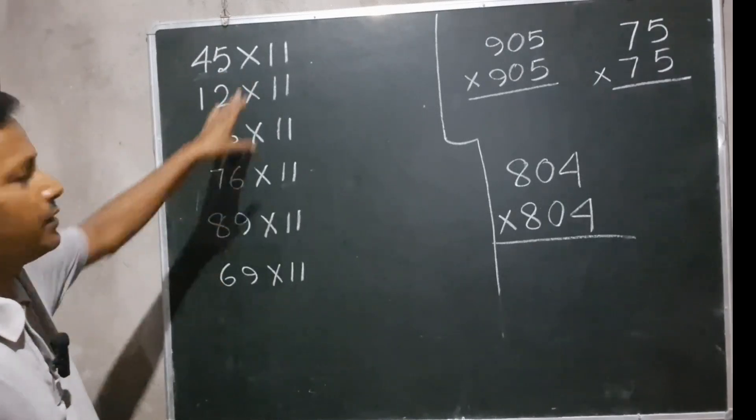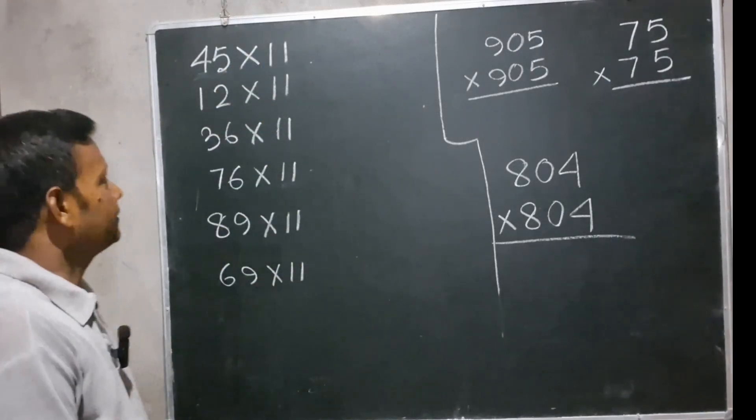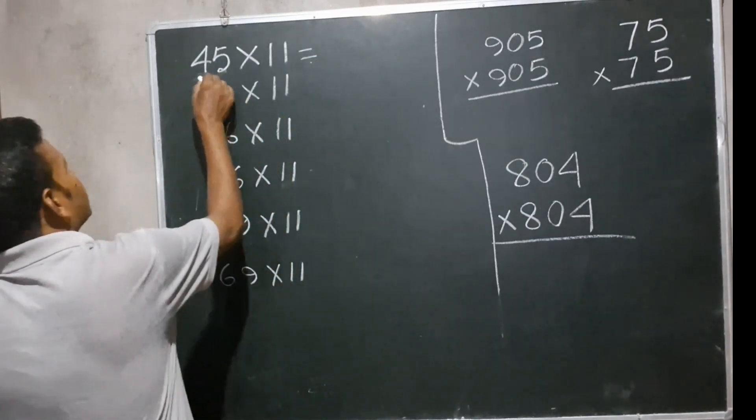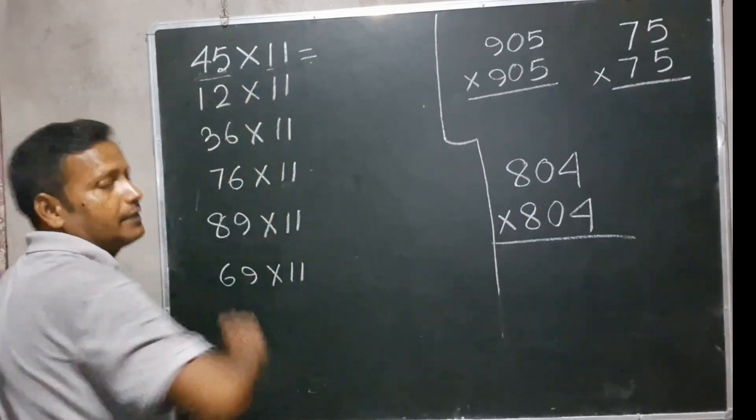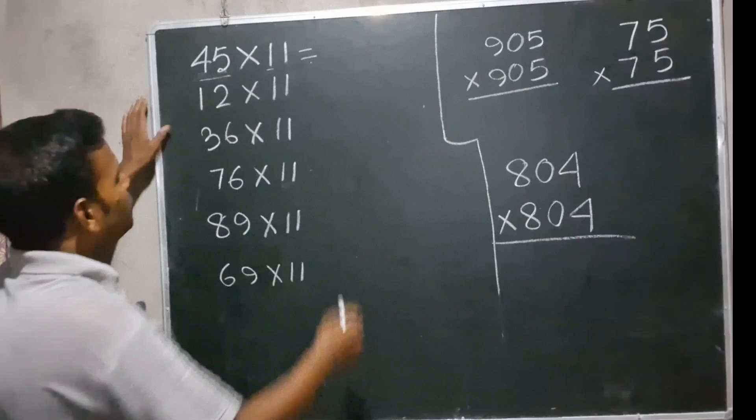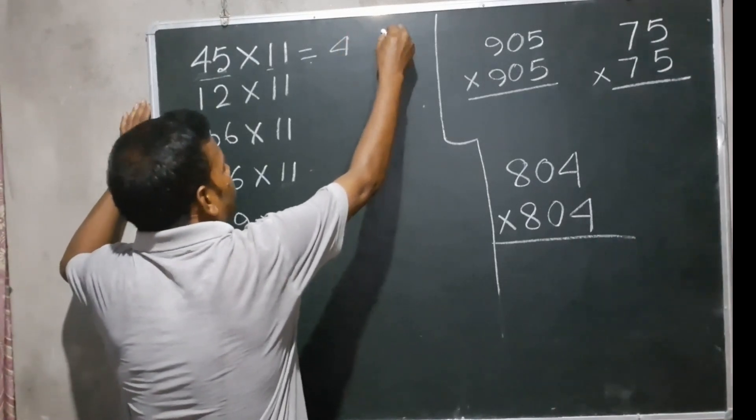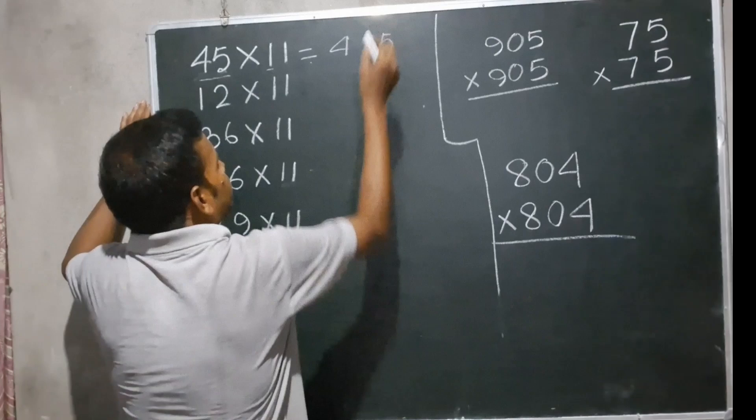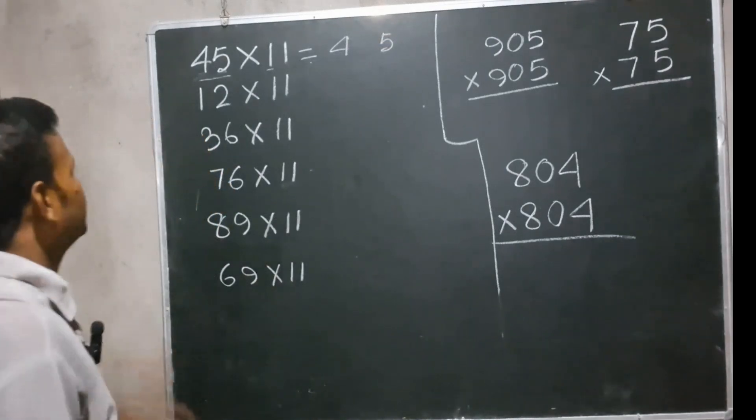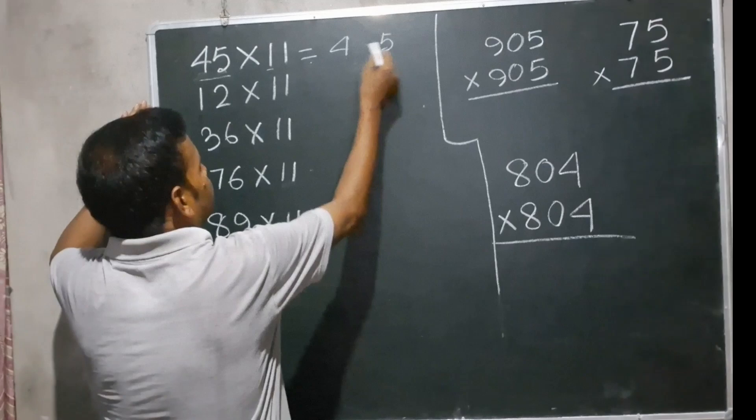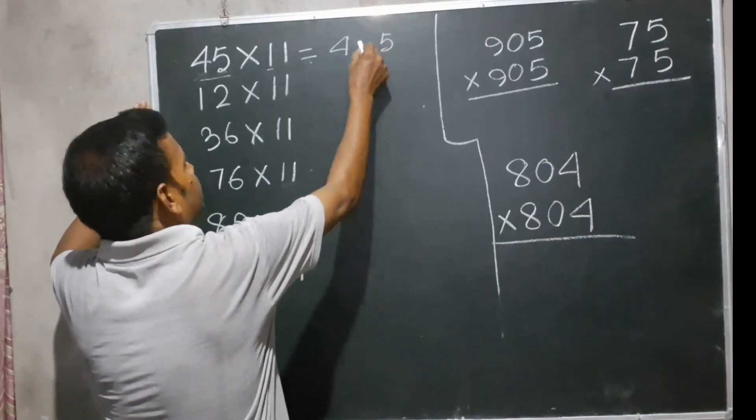This number with 11. First, we have to multiply 45 with 11. 45 ones are 45. We write 5 in the product. 45 ones are 45, and we add these two: 4 and 5 equals 9. So the answer is 495.